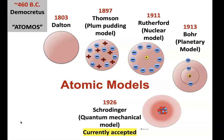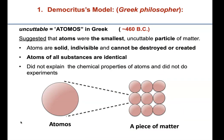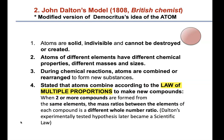Today we will discuss the first models, from Democritus up to Thompson. Democritus noticed that when he kept cutting different types of matter into smaller and smaller particles, there was an uncuttable particle — in Greek this was called "atomos." He said there is an indivisible, small, solid particle common to all matter that cannot be created or destroyed, and that all atoms of different substances are identical. He did not explain chemical properties or use experiments, as he was not a scientist.